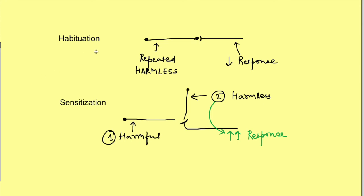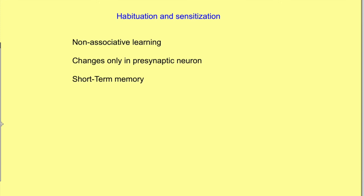To summarize: habituation is a decrease in response to a non-noxious stimulus, and sensitization is an increase in response to a non-noxious stimulus following a noxious stimulus. Both are non-associative forms of learning, and both cause changes only in the pre-synaptic neuron, not the post-synaptic neuron. These changes are only transient, which is why both habituation and sensitization are responsible for only short-term memory.